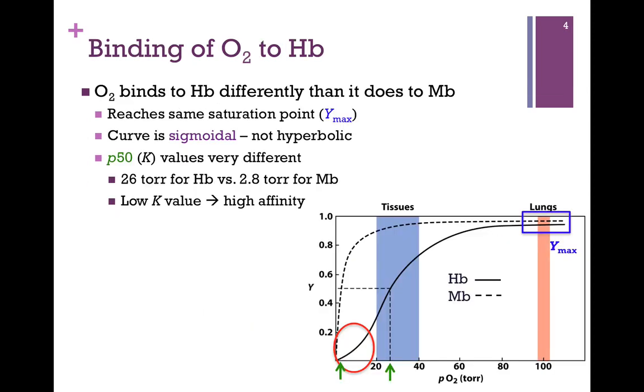Now let's compare their binding affinities. So here's a fractional saturation curve, such as we looked at in our last video. Fractional saturation on the y-axis, remember that's a fraction, so we go from 0 to 1. The partial pressure or concentration of oxygen in torr on our x-axis, and that's increasing from left to right.